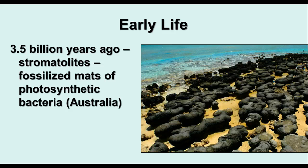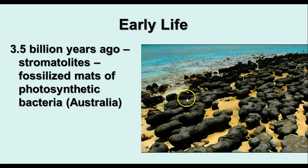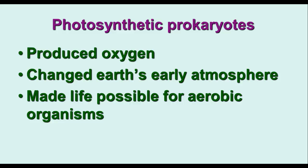About 3.5 billion years ago, we have evidence of the earliest life forms on Earth in the formation of stromatolites. These are fossilized mats of photosynthetic bacteria. These particular ones are in Australia, but you can find them in other places as well. Cyanobacteria still make formations like this, and you can find fossilized stromatolites all over the world, including even in Texas. These photosynthetic prokaryotes produce oxygen as a result of photosynthesis, and that led to changes in Earth's early atmosphere. The presence of oxygen was poisonous to some organisms, but made life possible for others that were able to utilize oxygen more efficiently and produce more energy, like we learned about in cellular respiration.